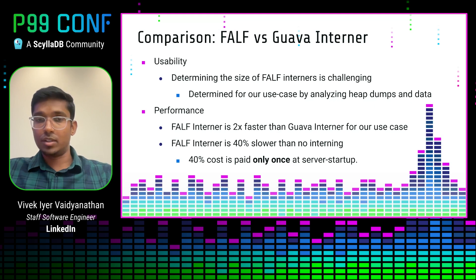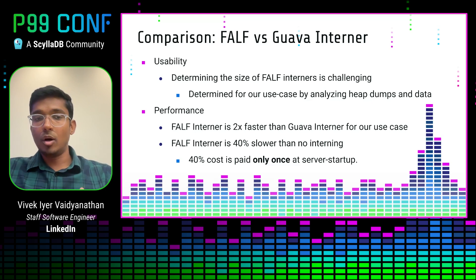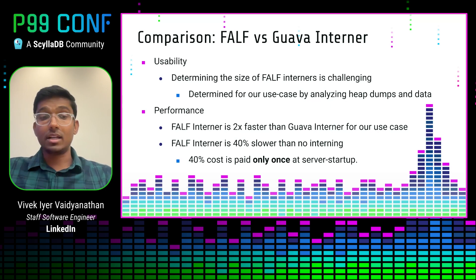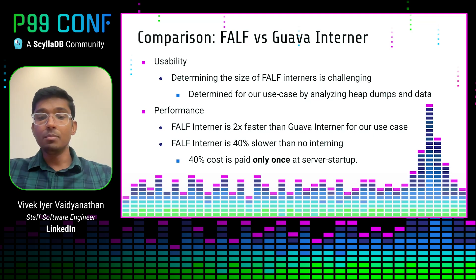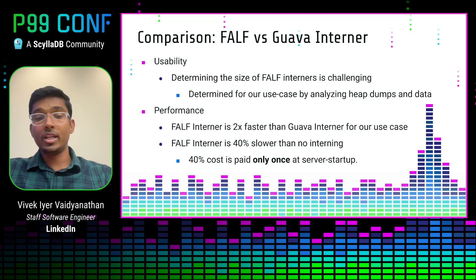Analyzing how the FALF interner performs compared to the Guava interner: the only pain point is that FALF requires you to provide an initial estimated capacity for the array cache, which can be problematic for some applications. In our case, we overcame this by profiling the data characteristics of our column. In terms of performance, the FALF interner is about 2x faster than the Guava interner, but about 40% slower than no interning at all. We pay this 40% performance cost only once at server startup — it does not come into play during query processing.